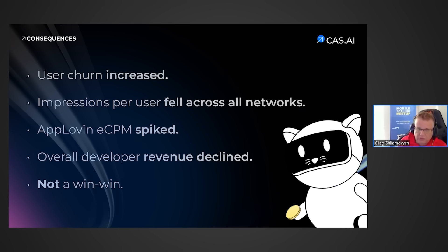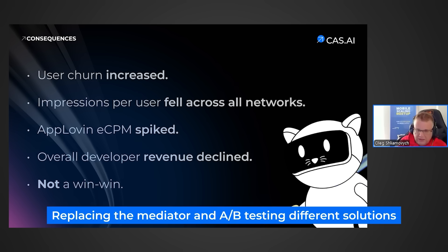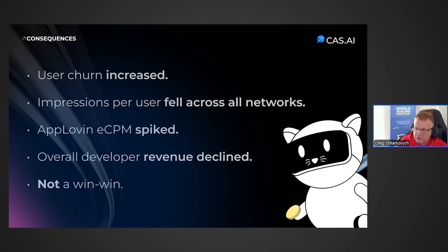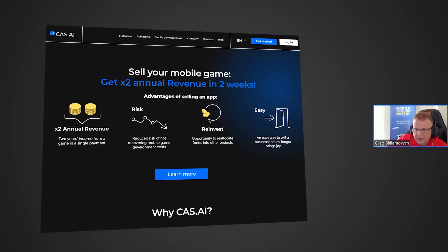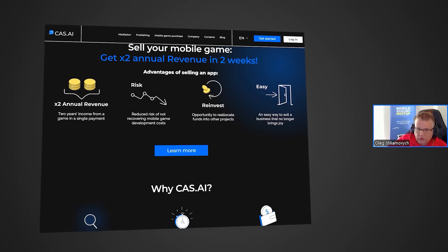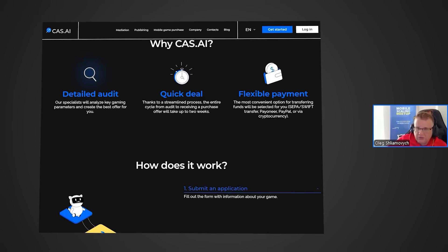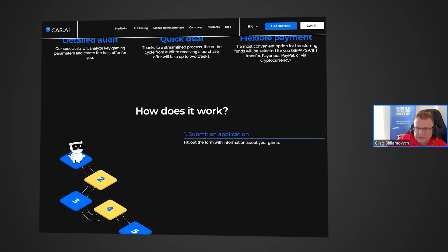What should you do if you have max mediation and the negotiations were unsuccessful? In that case, there's only one option — you need to change your mediator and A-B test different solutions. Unfortunately, there are no other options. If you are using Casd.ai, you can simply contact your manager and ask them to revert AppLovin to the minimalist template.